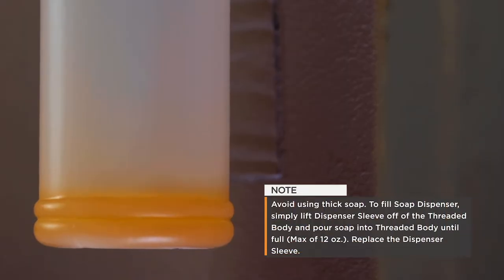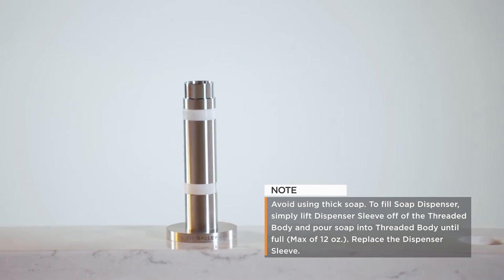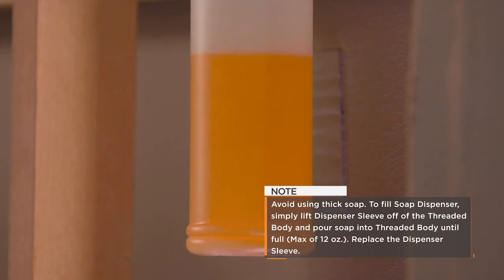Avoid using thick soap to fill the soap dispenser. Simply lift the dispenser sleeve off of the threaded body and pour soap into the threaded body until full, with a maximum of 12 ounces. Then, replace the dispenser sleeve.